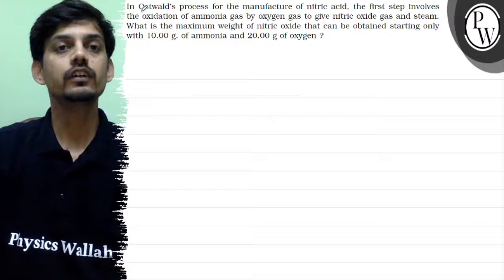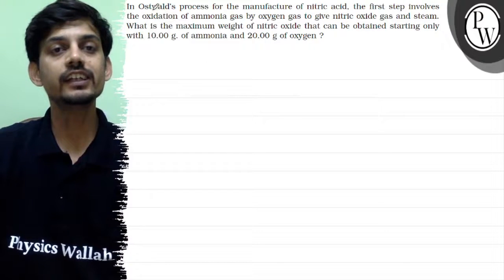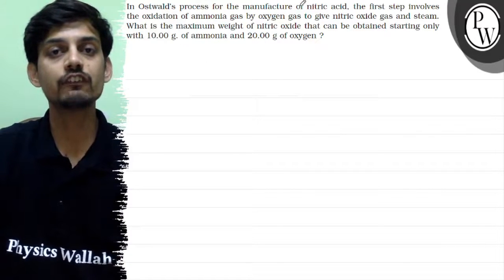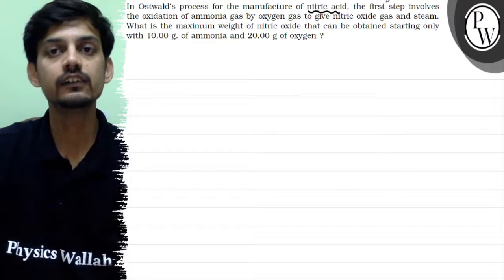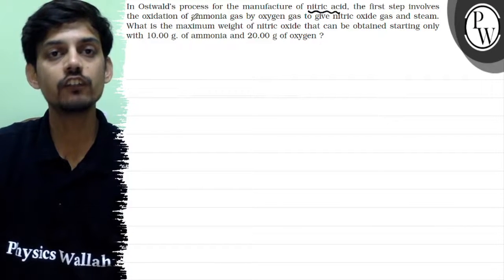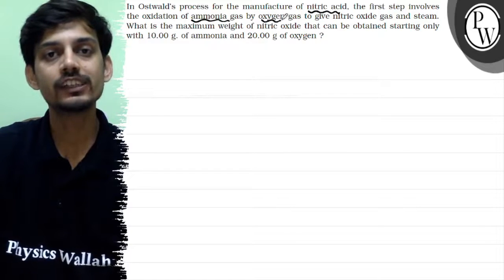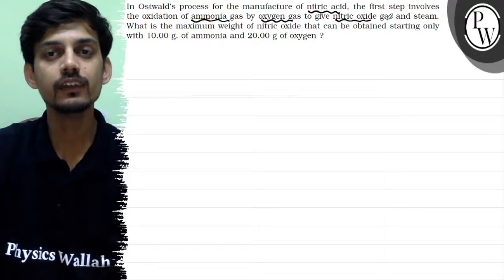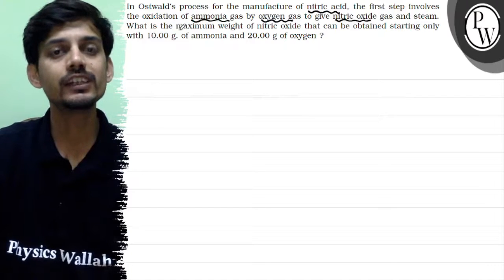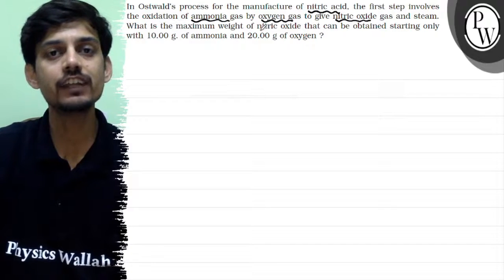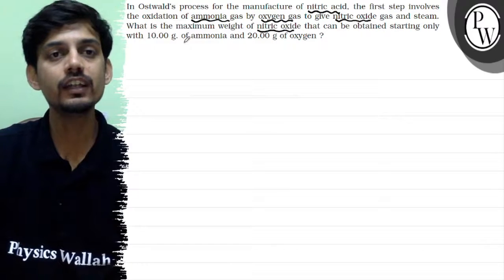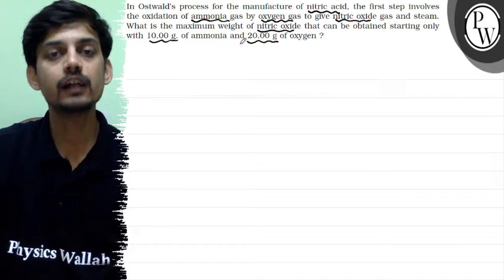In Ostwald's process for the manufacture of nitric acid, the first step involves the oxidation of ammonia gas by oxygen gas to give nitric oxide gas and steam. What is the maximum weight of nitric oxide that can be obtained starting only with 10 grams of ammonia and 20 grams of oxygen?